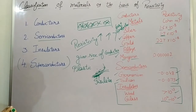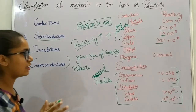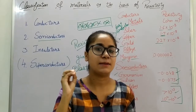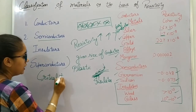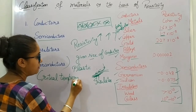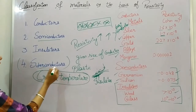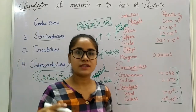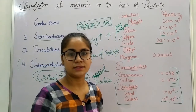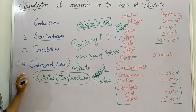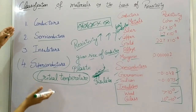Now let's talk about superconductors. In our syllabus these three categories are enough, but you should know about superconductors. Superconductors are those whose resistivity becomes zero at some specific temperature. That specific temperature is called the critical temperature, which you will learn about in higher classes. They are called superconductors because they achieve zero resistivity at that special temperature — something ordinary conductors cannot do.